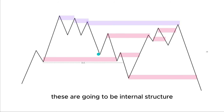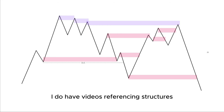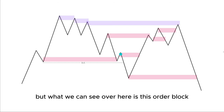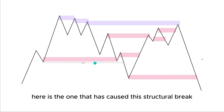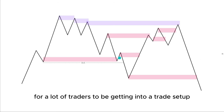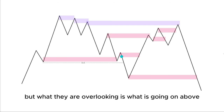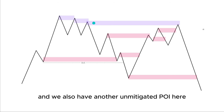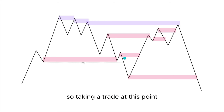These points in here are going to be internal structure. I won't go too deep into internal and external structure — I do have videos referencing structures, so feel free to revisit those. What we can see here is this order block is the one that has caused this structural break. This is a very common place for traders to get into a trade setup, but what they are overlooking is what is going on above. We have an unmitigated POI here, and we also have another unmitigated POI here.